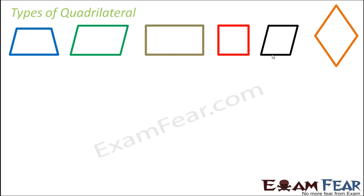If you observe, all of these quadrilaterals have different properties, but they all have 4 sides, 4 vertices, 4 angles, and 2 diagonals. That means all of these are quadrilaterals.